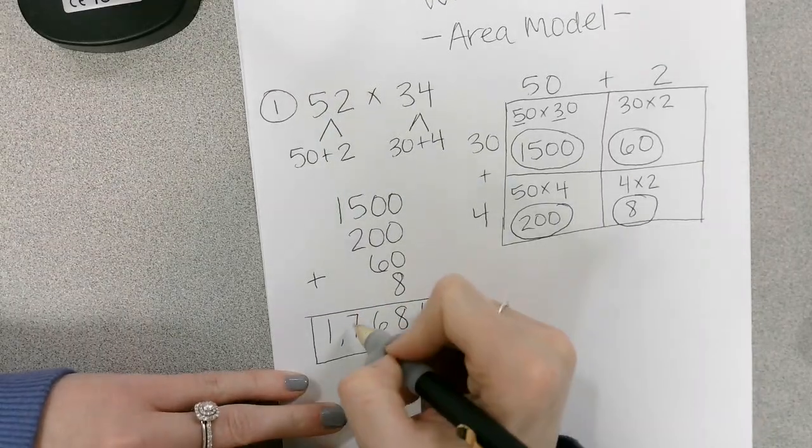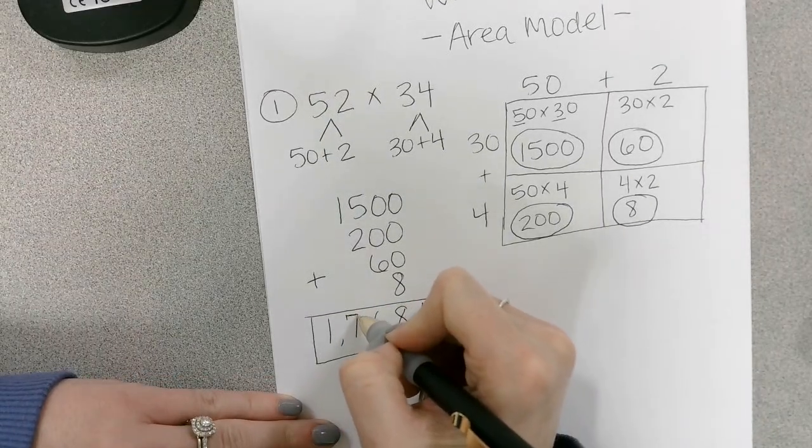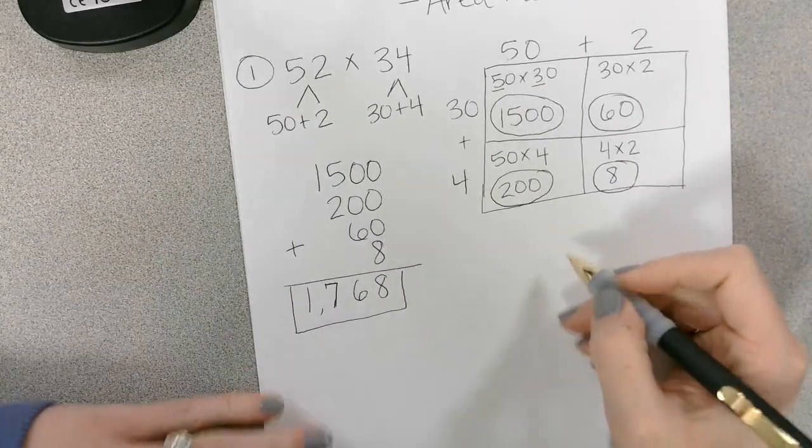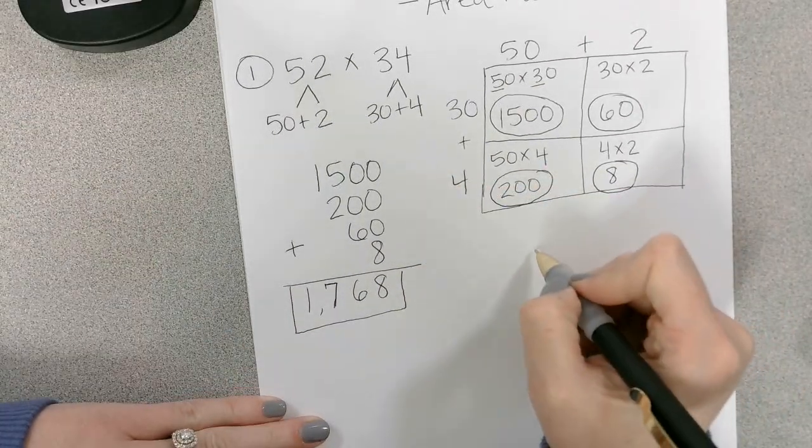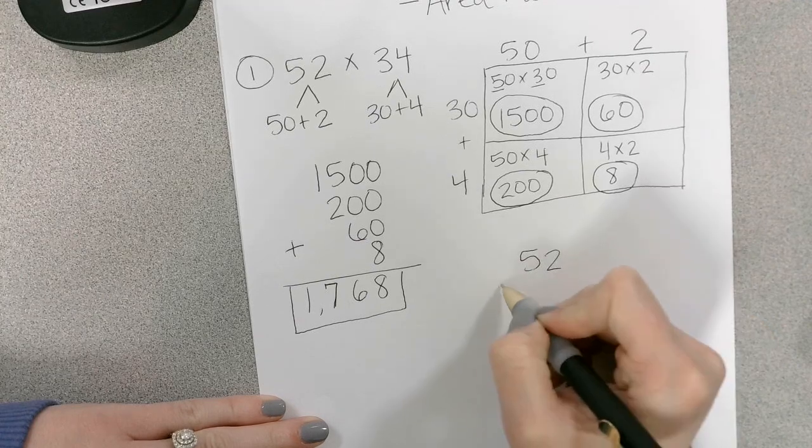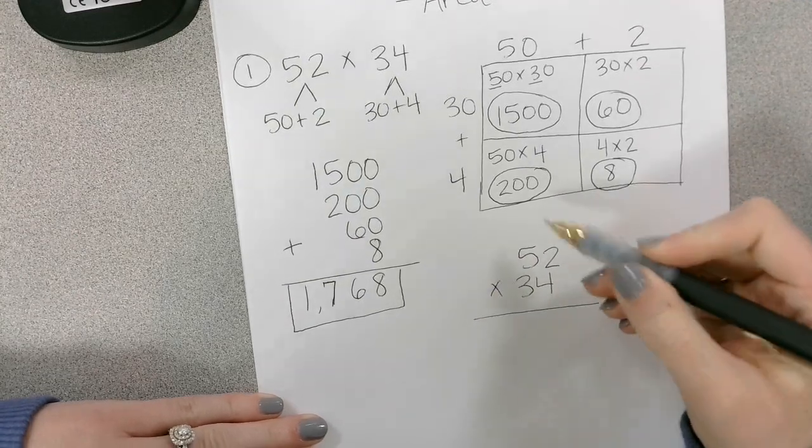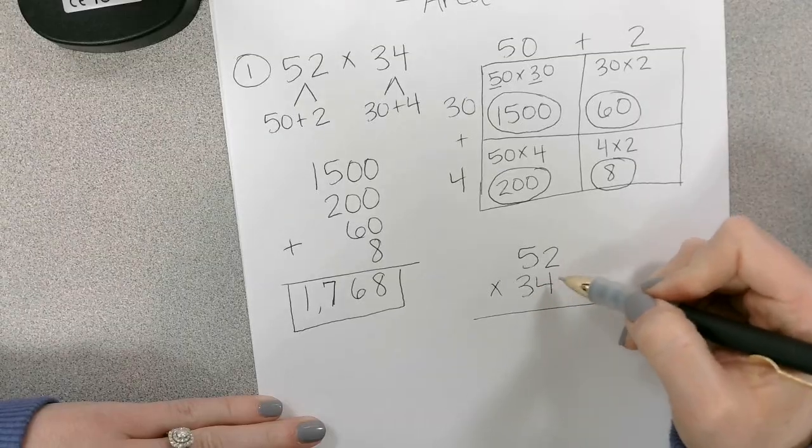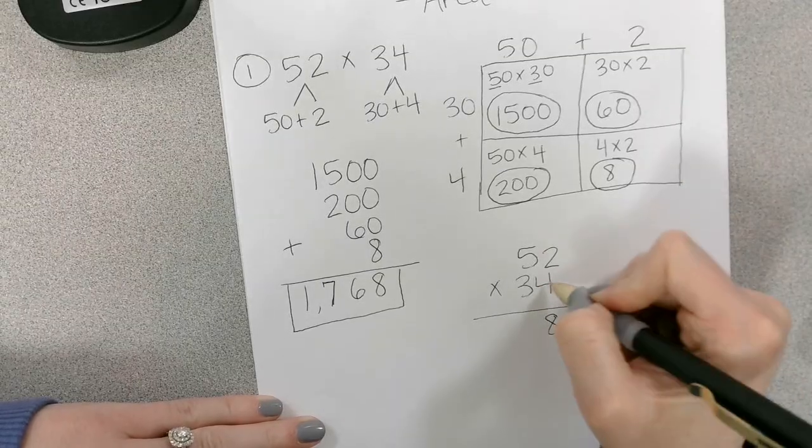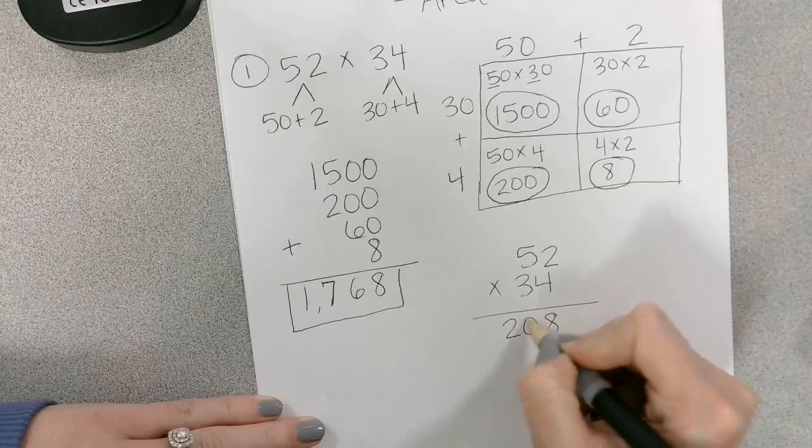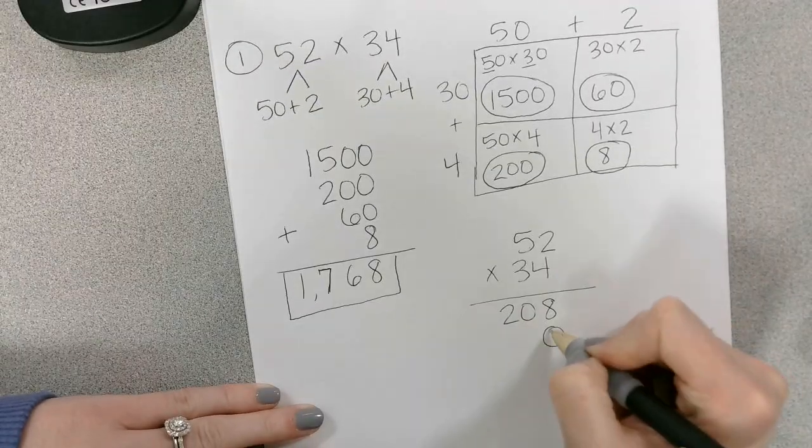I'm going to show you how we check that. If your parents are watching, they probably learned using the standard algorithm. So we're going to check that using the standard algorithm. 52 times 34. So we know we multiply everything by the number in the ones place first. 4 times 2 is 8. 4 times 5 is 20.